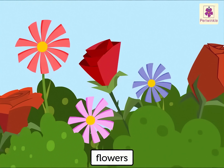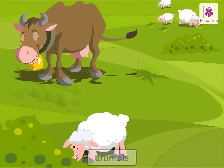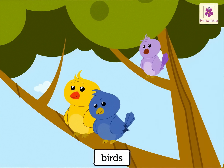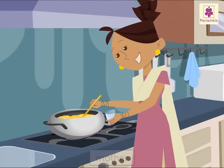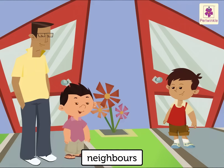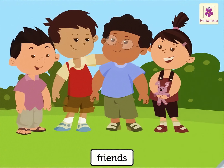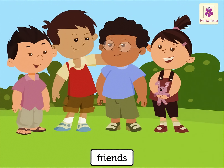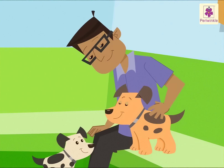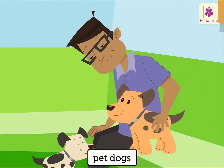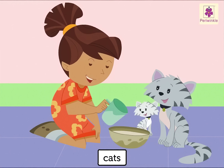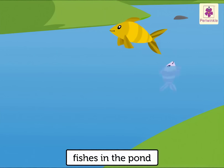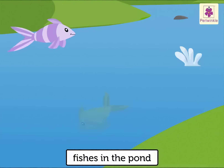People like mother, neighbors, and friends are all a part of the environment. Animals like pet dogs and cats are also a part of the environment. The fishes in the ponds are also found in the environment.